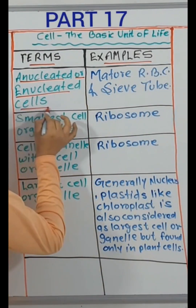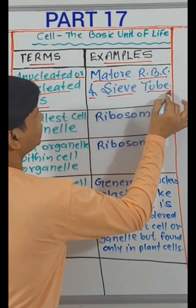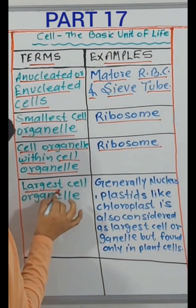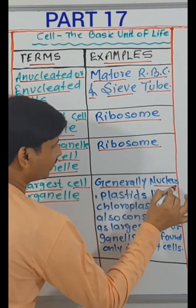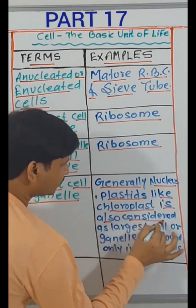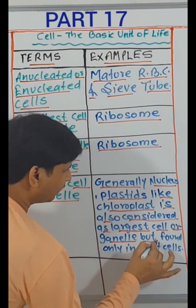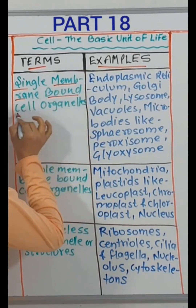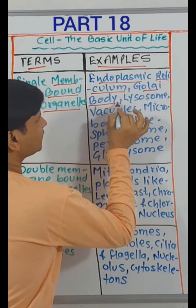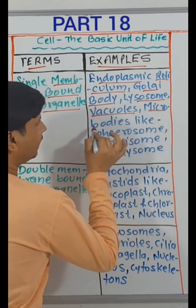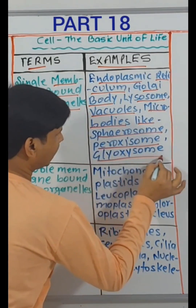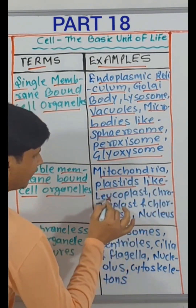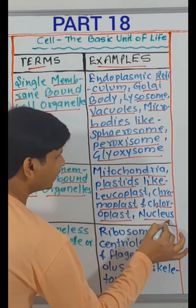Enucleated or anucleated cells — mature RBC and coenocyte. Smallest cell organelle — ribosome. Cell organelle within cell organelle — ribosome. Largest cell organelle — generally nucleus; plastids like chloroplast are also considered the largest cell organelle but found only in plant cells. Single membrane-bound cell organelles — endoplasmic reticulum, Golgi body, lysosome, vacuole, microbodies like spherosome, peroxisome, glyoxysome. Double membrane-bound cell organelles — mitochondria, plastids like leucoplast, chromoplast and chloroplast, nucleus.